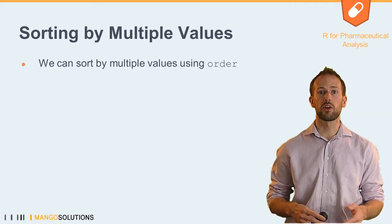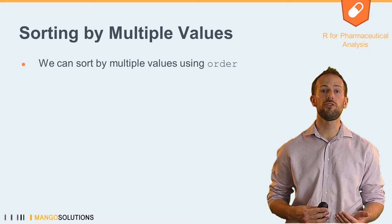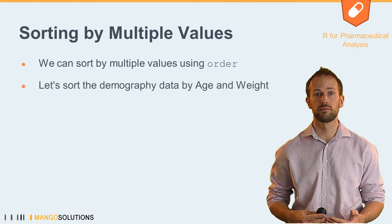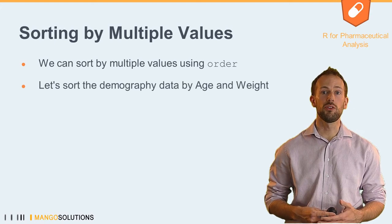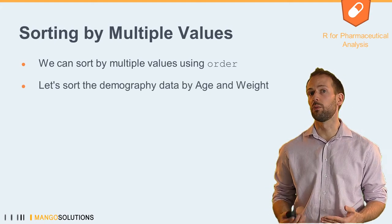When the same value occurs multiple times, R uses the original order of the data to sort the values. We can, however, use the order function to sort by as many variables as we like.